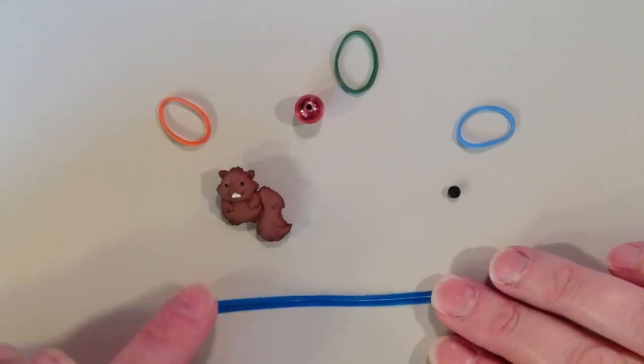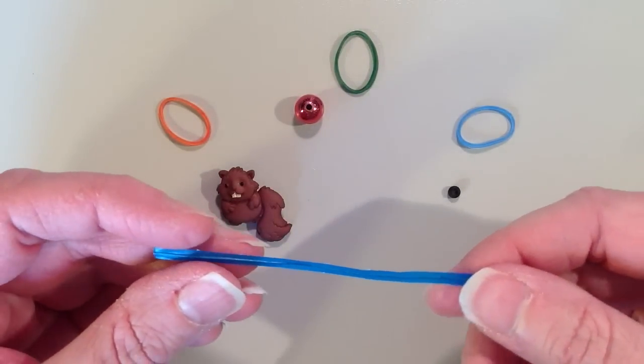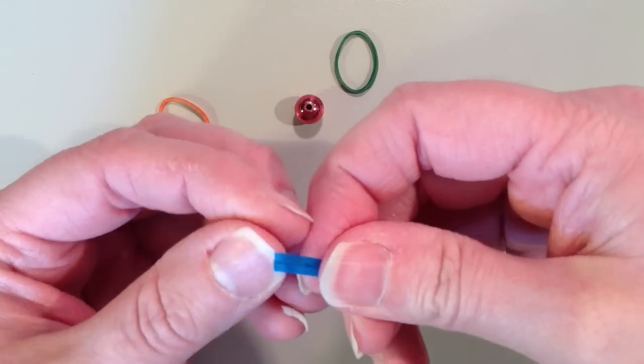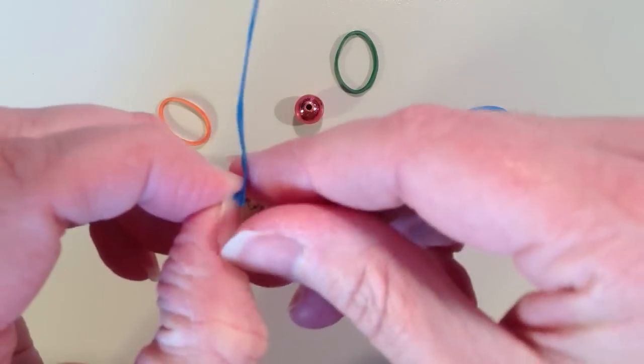So all you will need is a twisty tie which most people have somewhere in their household, and what you need to do is separate the plastic or paper part from the metal.